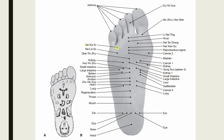Nei Qi is located opposite Gallbladder 43 on the plantar surface of the foot. Nei Qi Chi is located opposite Stomach 43 on the plantar surface of the foot. The anus point is located opposite Stomach 44 on the plantar surface. Indications of the anus point include constipation and diarrhea.